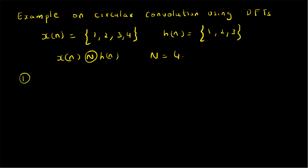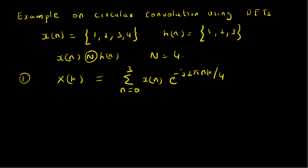The first step is to find the DFTs of both x[n] and h[n]. For x[n], the 4-point DFT X[k] is defined as the summation from n=0 to 3 of x[n] · e^(−j2πnk/4). For k=0, the twiddle factor becomes 1, so X[0] = 1+2+3+4 = 10.